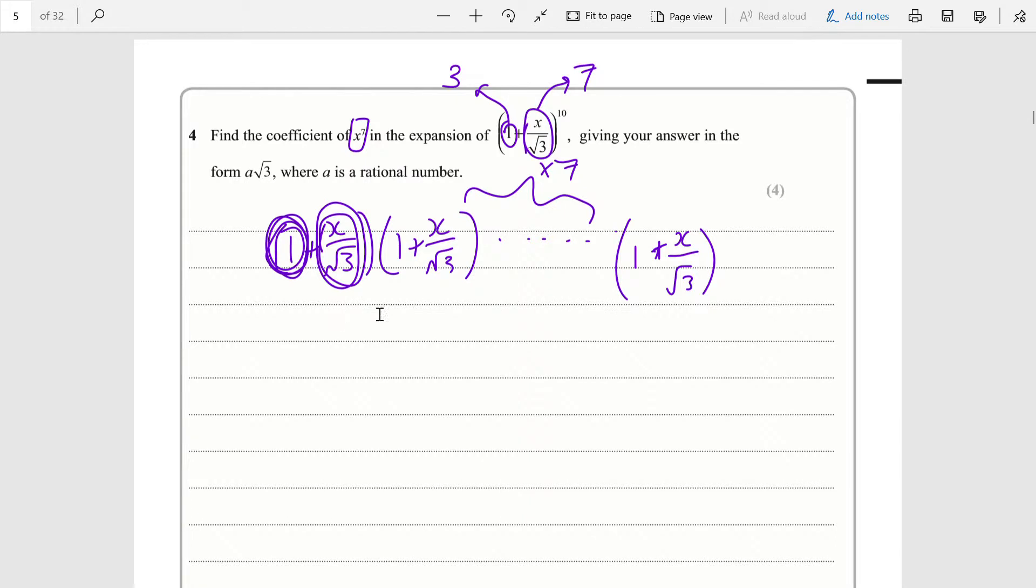There's a certain number of combinations where you're picking the first term from three brackets and the second one from seven brackets. The number of ways that is, is the same number of ways as if you try to pick seven brackets which you're going to take x over root 3 from.